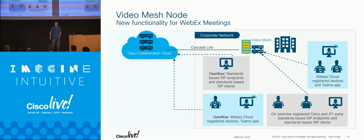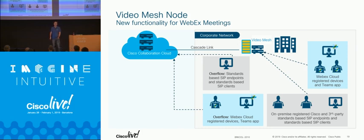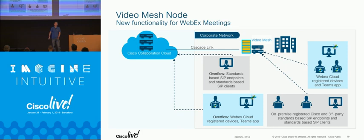Question: does the video mesh node use Expressways? No — it bypasses that completely. The video mesh node negotiates and talks with the firewall directly. It's a TLS connection to the cloud. We do leverage the public cloud — AWS — for signaling traffic. If it's a WebEx meeting, the media goes directly from the video mesh node to our cloud. And if you're direct peering with us via Equinix, that would actually be a completely private circuit — it would never go over the public Internet.